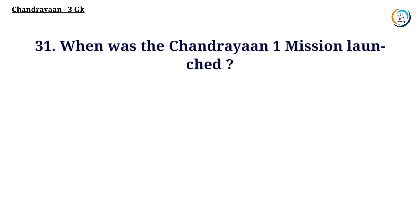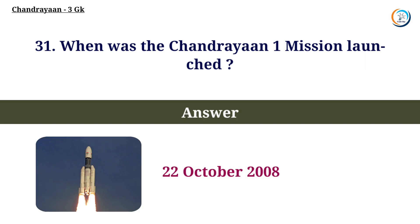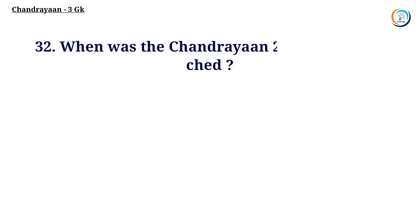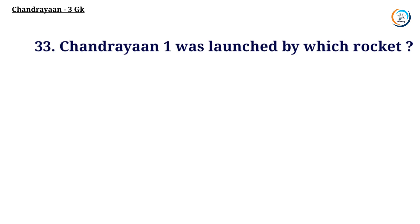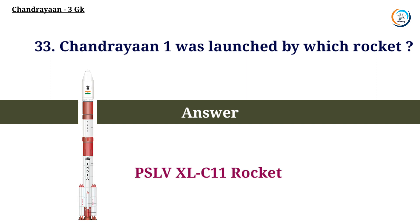When was the Chandrayaan-1 mission launched? Answer: 22nd October 2008. When was the Chandrayaan-2 mission launched? Answer: 22nd July 2019. Chandrayaan-1 was launched by which rocket? Answer: PSLV-C11 rocket.